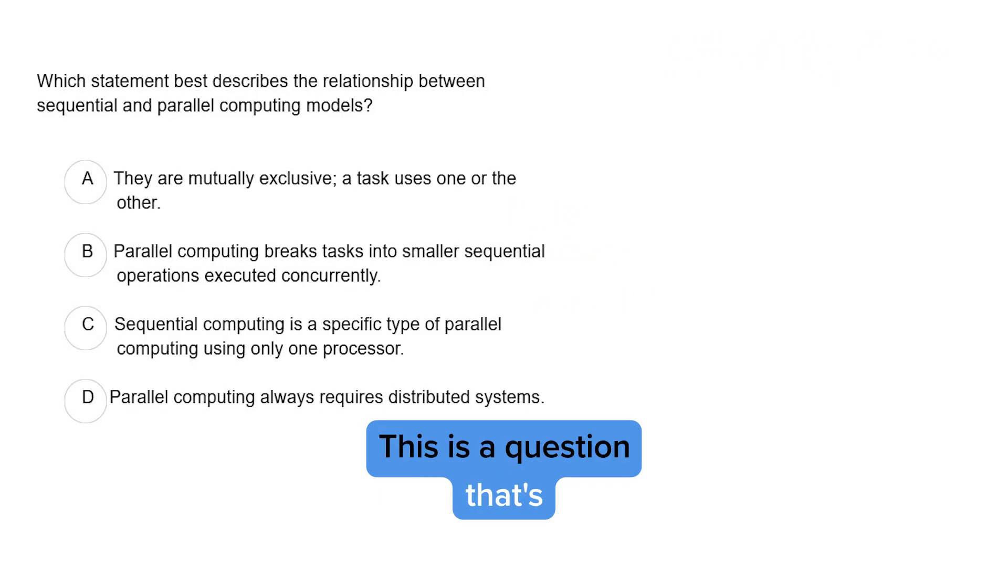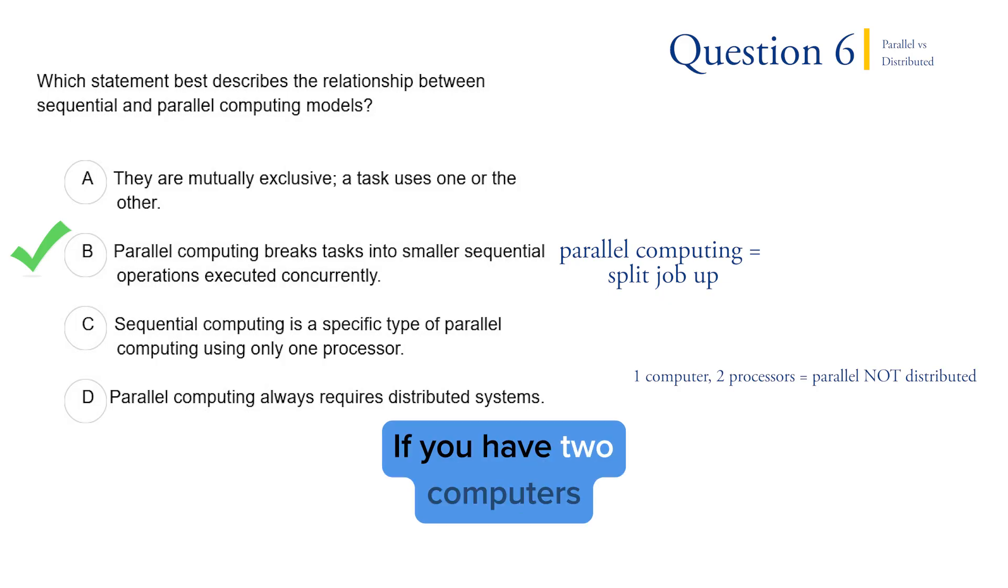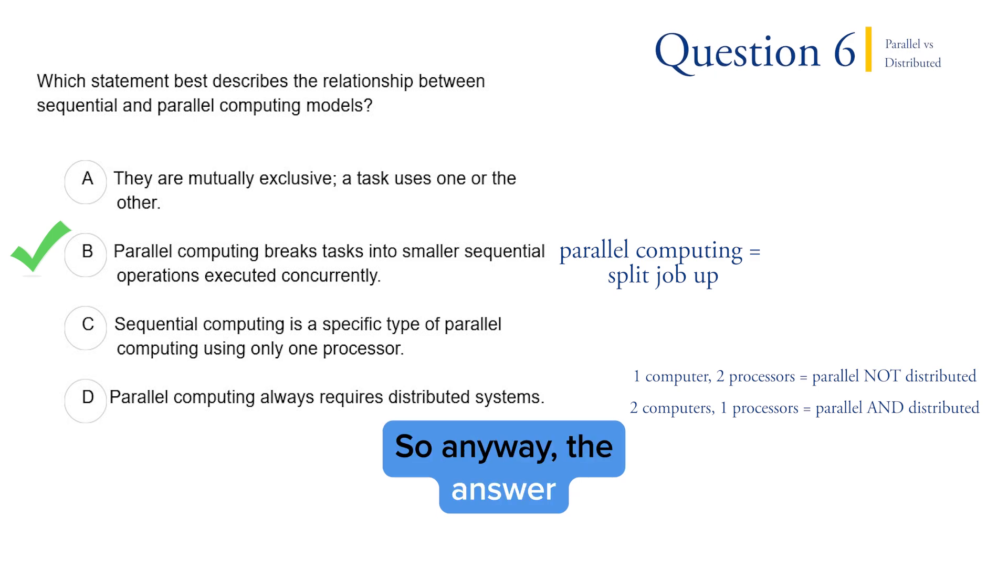Question six. This is a question that's about parallel versus sequential computing. Remember, parallel jobs are split up and run on different processors all at the same time. So that's the answer we're looking for. D is a common misconception. If you have a computer—one computer with two processors—that's parallel computing because you can split up the job between two processors, but it's not distributed. Distributed means at least two computers. If you have two computers with one processor and you split up the job, that's also parallel because you split up the job, and it's also distributed because you have two or more computers. Remember, distributed means two or more computers. So anyway, the answer here is B.